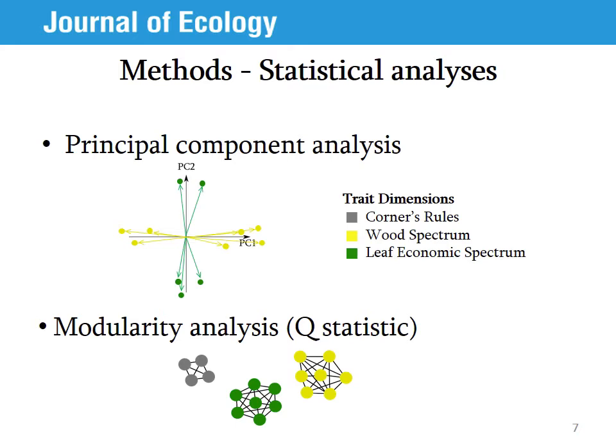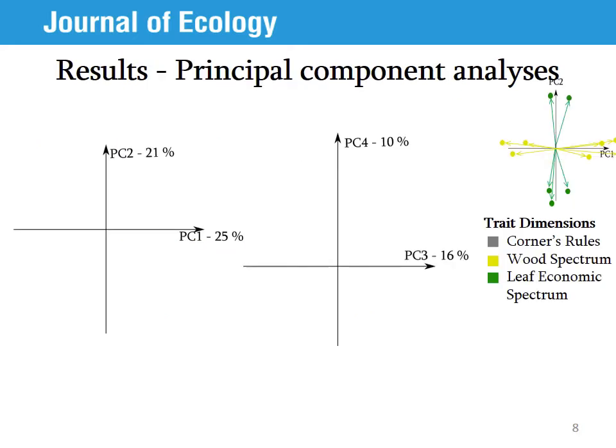In this analysis, I define the modules based on trait dimensions. The cartoon shown here illustrates a scenario of perfect independence between the modules or trait dimensions, where the dots represent traits and the lines represent correlations. So, what did we find?